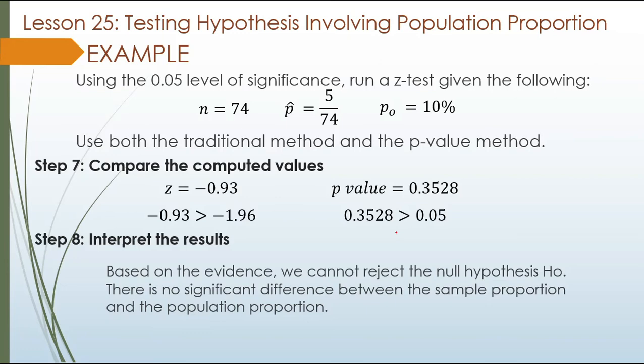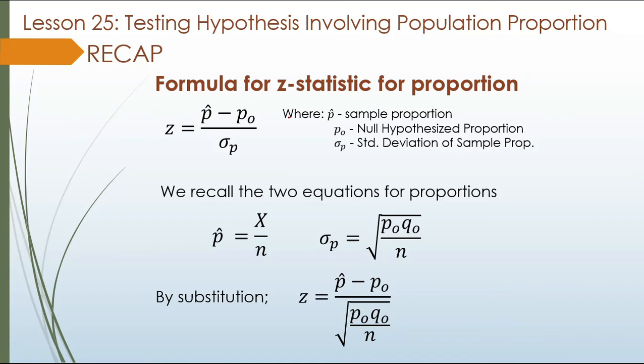There is no significant difference between the sample proportion and the population proportion. To recap the formula for the z-statistic: z equals p-hat minus p-sub-o over the standard deviation of p. First compute p-hat and q-sub-o, then compute the z value, get the area, and compare with alpha using the p-value approach.